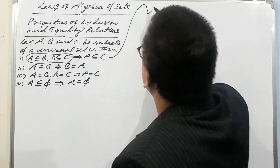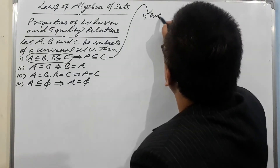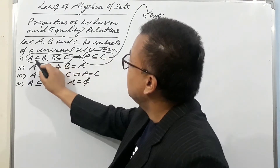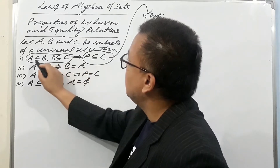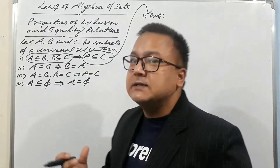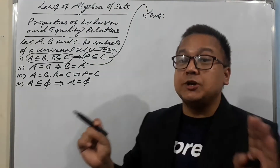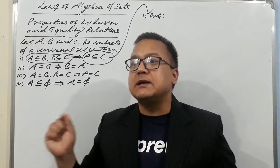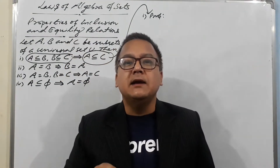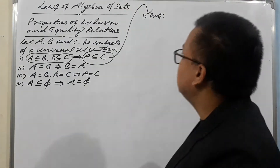Proof of property one. We need to prove A ⊆ C, given that A ⊆ B and B ⊆ C. To prove A ⊆ C, we recall the definition of subset: A is a subset of C if every element of A is also an element of C.